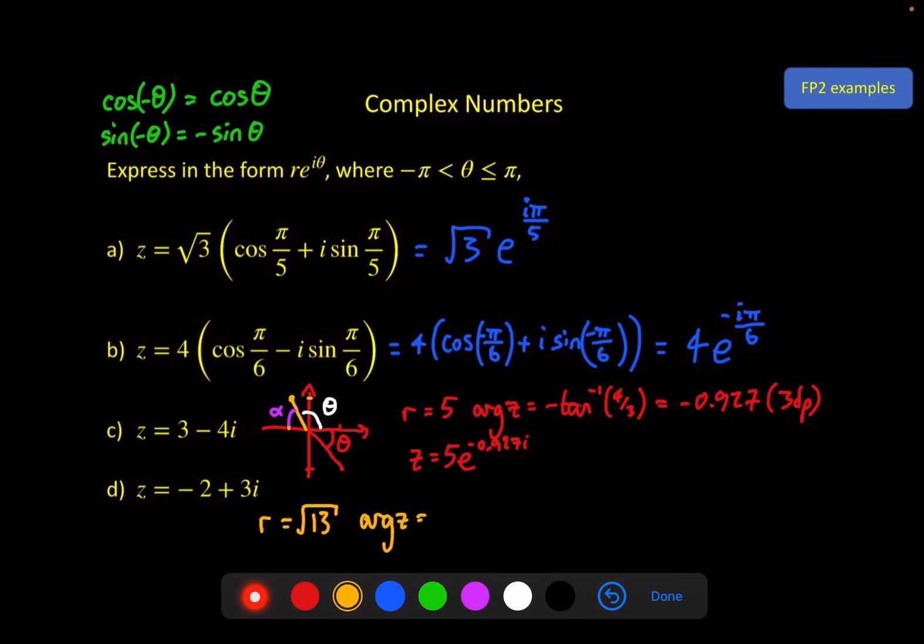Argument is equal to π minus the inverse tan of 3 over 2. Put all that on your calculator and you should get 2.159 to 3 decimal places again, so z is equal to root 13 e to the 2.159i.